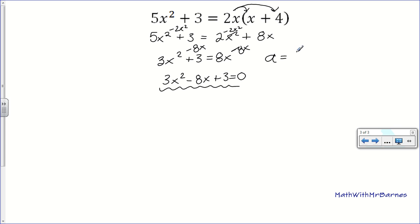And now, I have ax squared plus bx plus c form. So, a is 3, b is negative 8. And then, c is also 3.